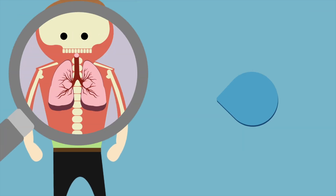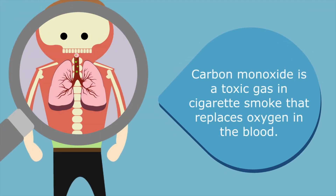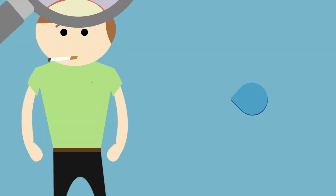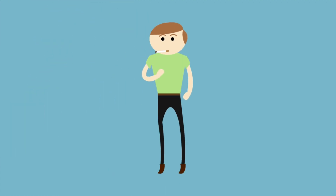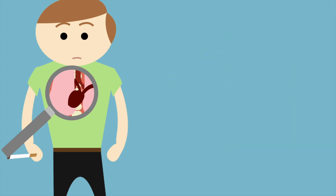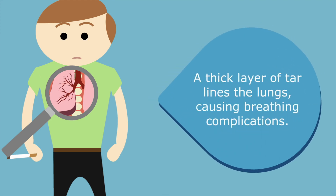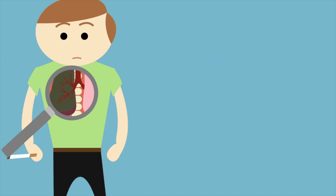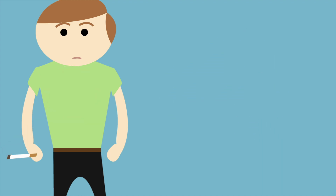Oxygen is carried around the body by red blood cells, and when you inhale smoke from a cigarette, the CO is absorbed into your blood through the lungs. Because CO binds with hemoglobin 200 times more readily than oxygen, your body is starved of oxygen, leading to many health complications and smoking-related diseases.